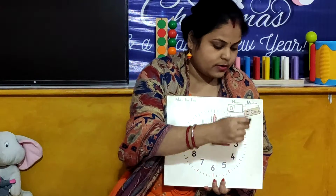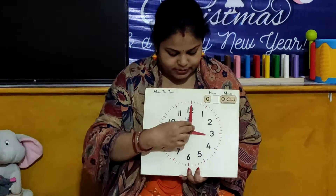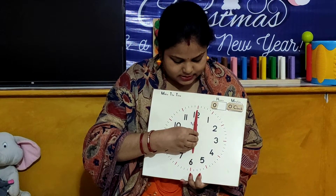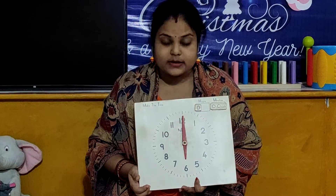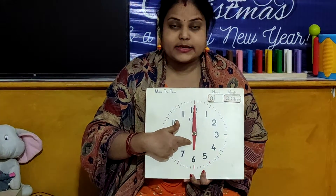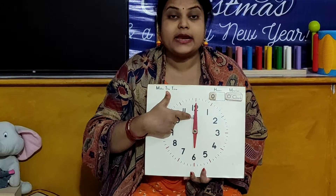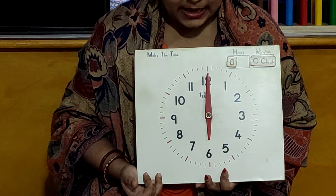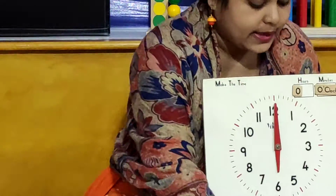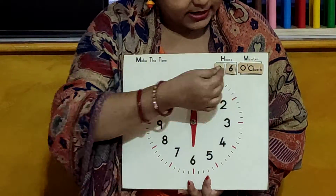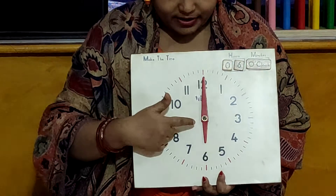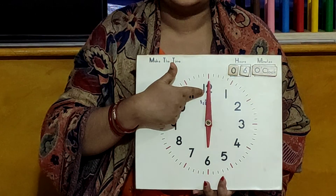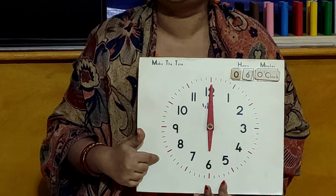Okay children, so now I will ask you a question. So look here. What's the time? Our hand is on number 6 and minute hand is on number 12. So what's the time? It's 6 o'clock. Yes children, it is 6 o'clock. So when the hour hand is on number 6 and minute hand is on number 12, it's time 6 o'clock.